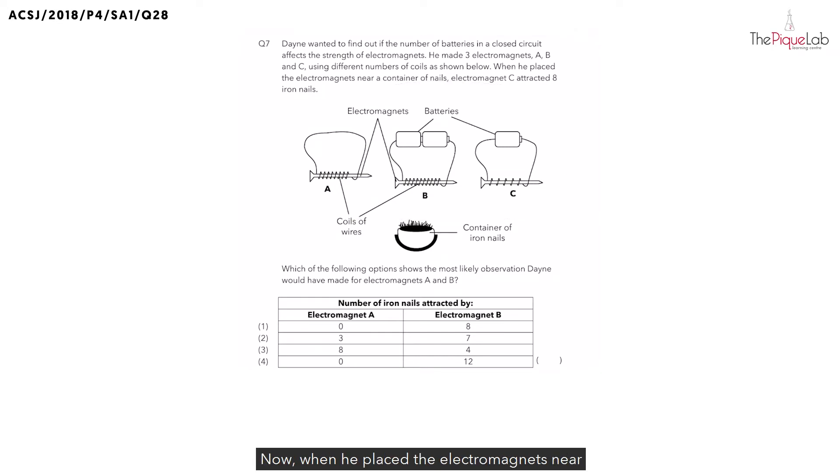When he placed the electromagnets near a container of iron nails, electromagnet C was able to attract eight iron nails. In this question, they ask which of the following options show the most likely observation that Dane would have made for electromagnets A and B?